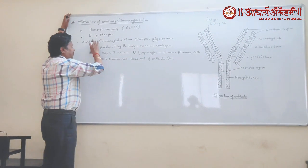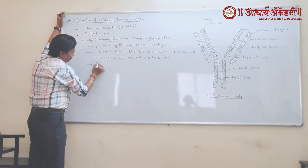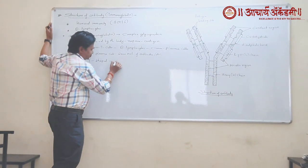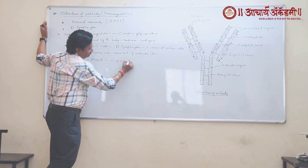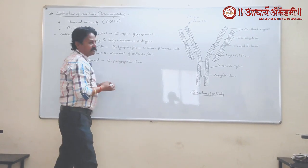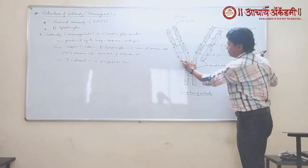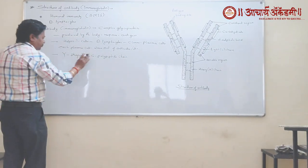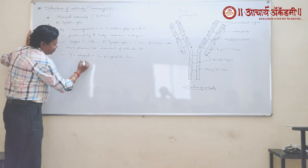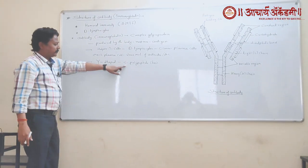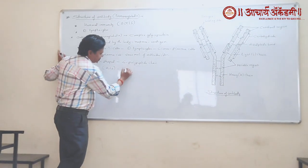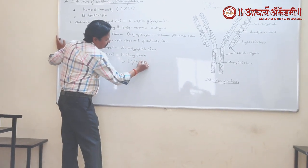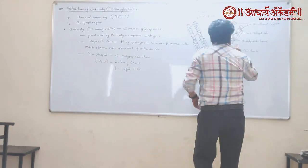If you observe the structure of an antibody, it appears like a Y-shape. Each antibody consists of four polypeptide chains. We can see the first chain, second chain, third chain, as well as the fourth chain. The formula for these four polypeptide chains is H2L2, where H represents the heavy chain and L represents the light chain.